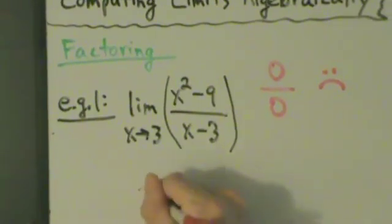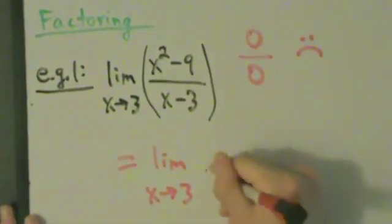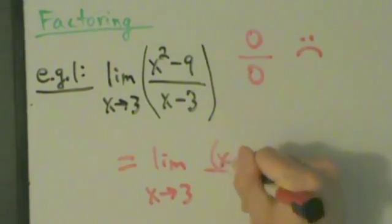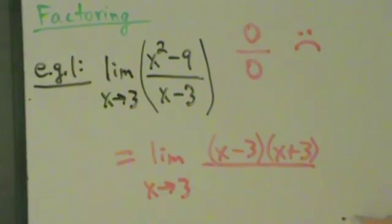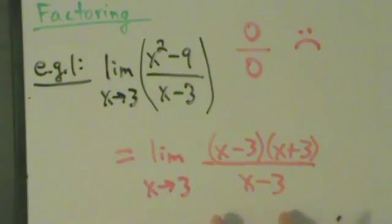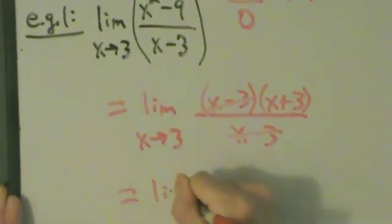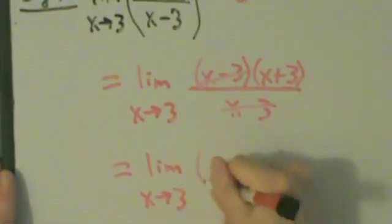This limit is going to equal the limit as x approaches 3. On the top, we have x squared minus 9 — that's a difference of squares — so that factors as x minus 3 times x plus 3. On the bottom, we just have x minus 3. So there's a common factor of x minus 3 that can be canceled, and this simplifies to the limit as x approaches 3 of x plus 3.